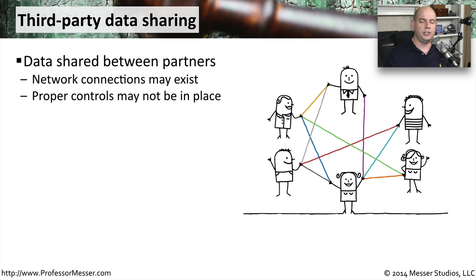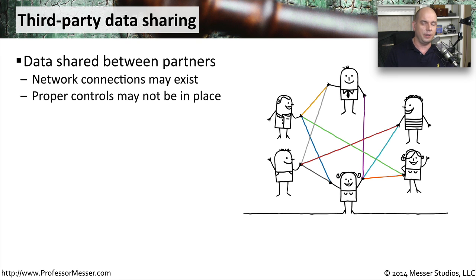When you're in a third party relationship, there's certainly going to be data that's shared between the organizations. There's probably going to be network connections in place so that this data can be shared very easily. You do have to make sure that proper controls are in place. If you're accessing data at a third party, you should only be able to access the data that's important for your particular business function — not other types of data or other systems at the third party organization. It's very important that you are able to audit and ensure that these data controls are in place.